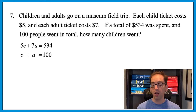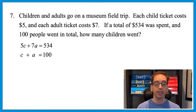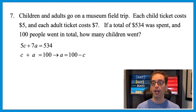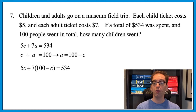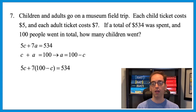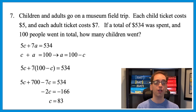Using substitution: we want everything in terms of c, so isolate a from the second equation — a equals 100 minus c. Substitute into the first equation: 5c plus 7(100 minus c) equals 534. Distributing: 5c plus 700 minus 7c equals 534. Combining like terms: negative 2c equals negative 166, so c equals 83.